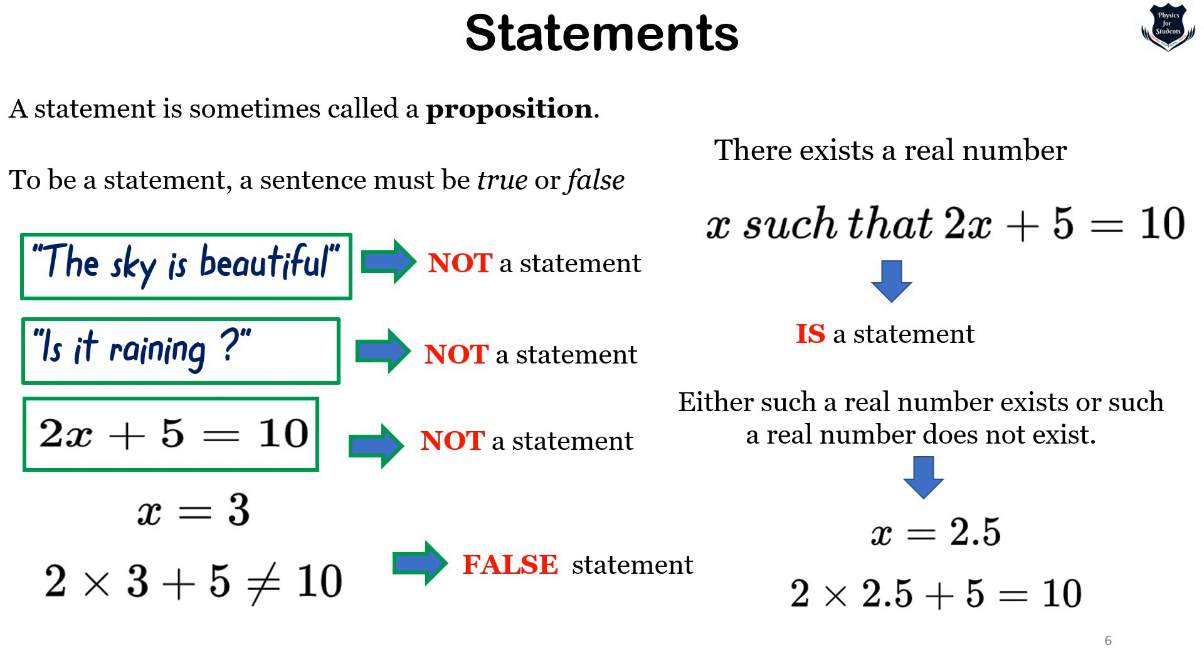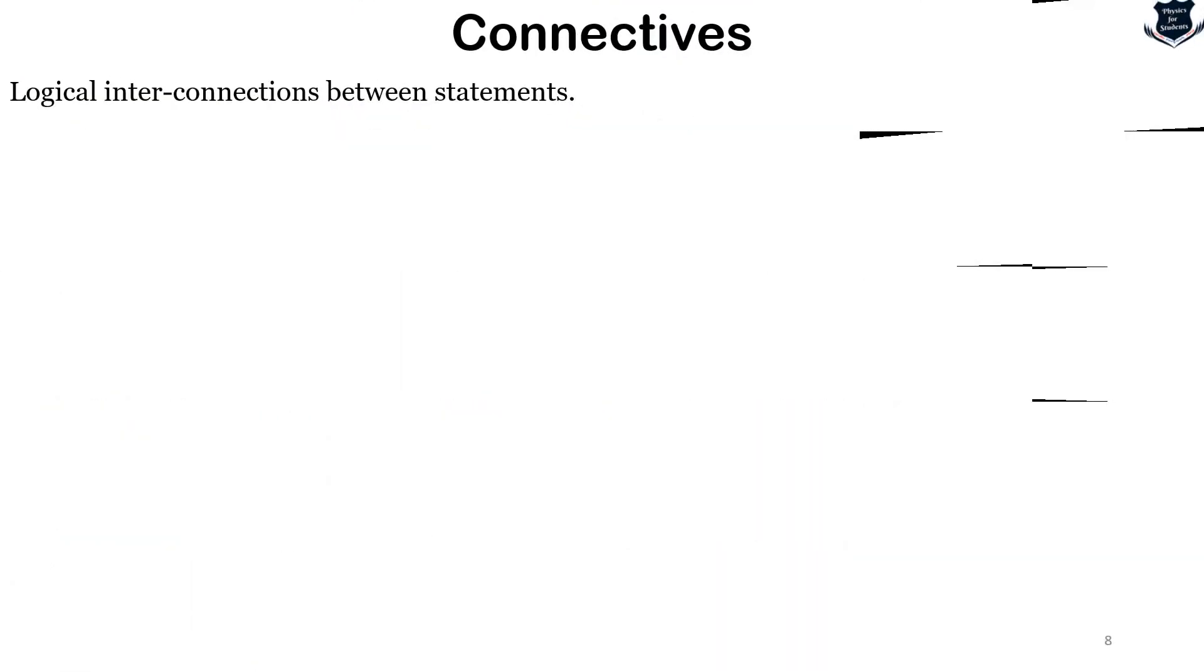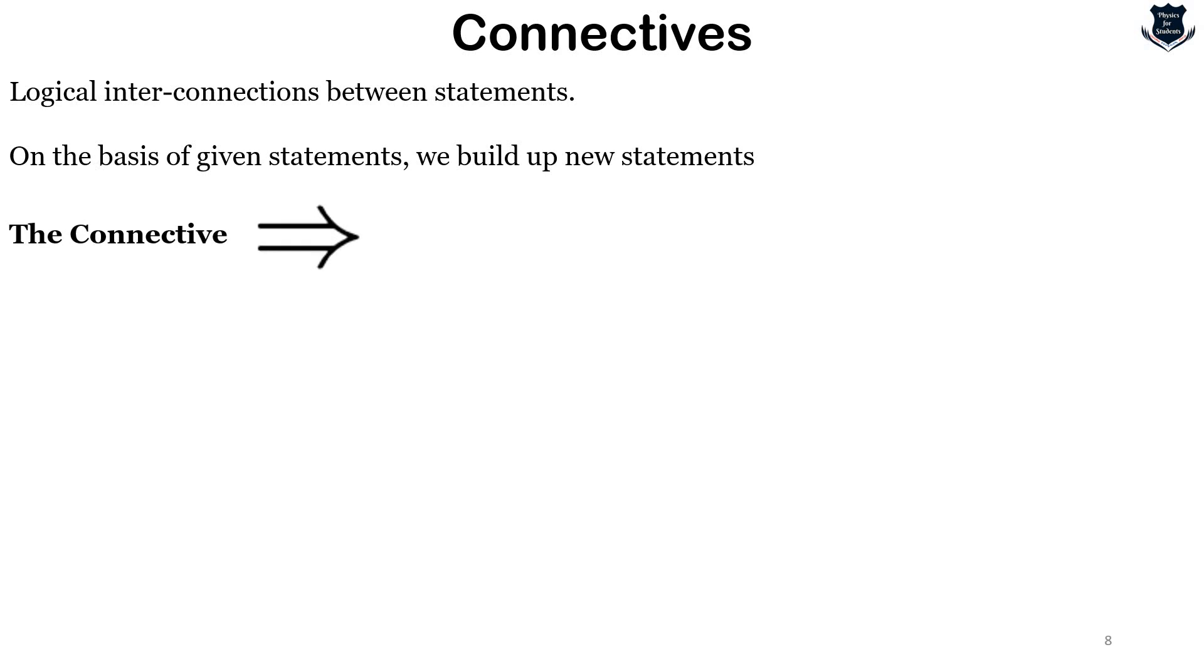We next move on to what are called connectives. In mathematics we are concerned with logical interconnection between statements. We build up new statements based on existing statements, and there are symbols which are useful for describing this logical interconnection. For example, this connective is called 'implies.'